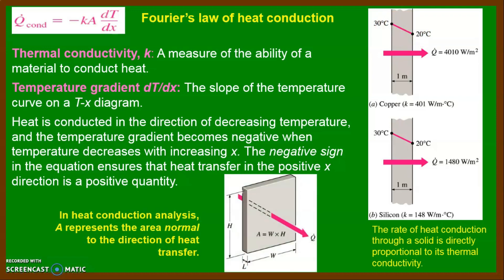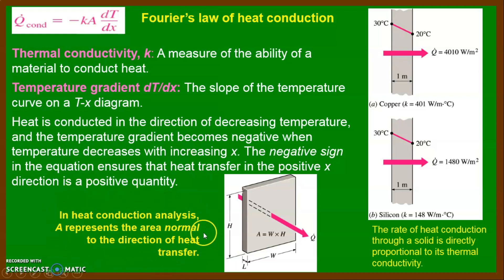One important thing to keep in mind: A is the cross-sectional area perpendicular to the direction of heat travel. In this figure, you can see heat is transferred in one direction, and we take the cross-sectional area perpendicular to that direction, A equals W times H. This is very important in every numerical — in all later discussions, remember that the cross-sectional area in Fourier's Law is always perpendicular to the direction of heat travel.